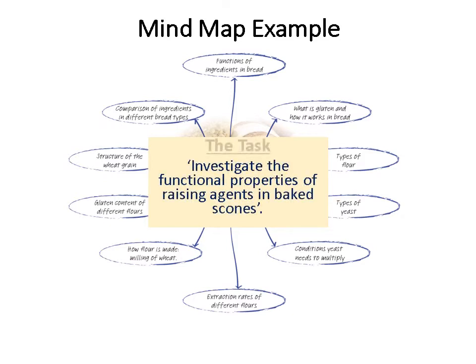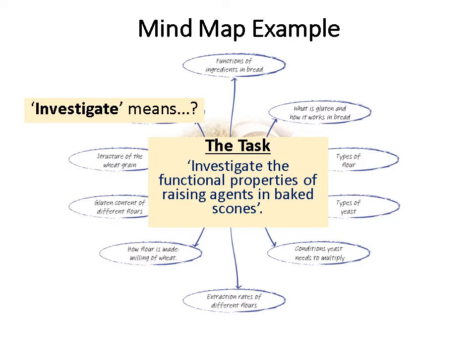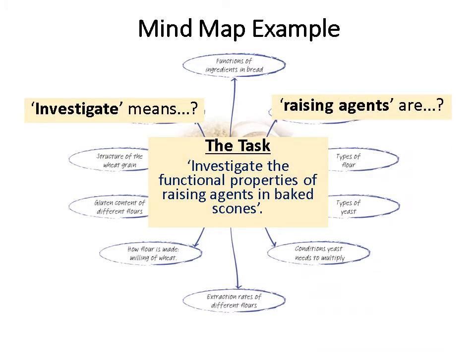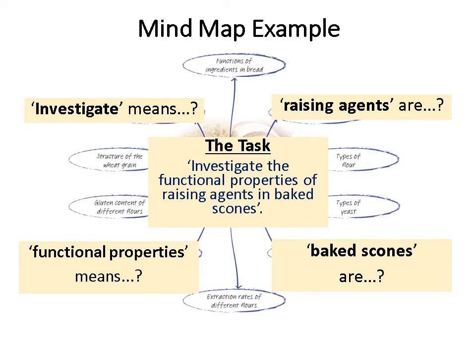In the mind map, you put your task in the middle — 'investigate the functional properties of raising agents in baked scones' — and then you ask: what does investigate actually mean? What are raising agents? What do functional properties mean? What are baked scones? You go online, use books, newspapers, whatever you need. You're not writing loads of sentences here — just a sentence or two to break down each keyword and make sense of the task for yourself.